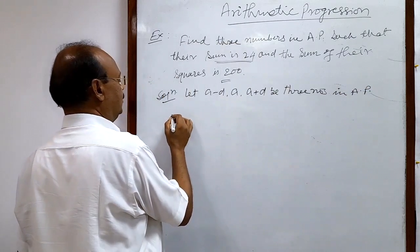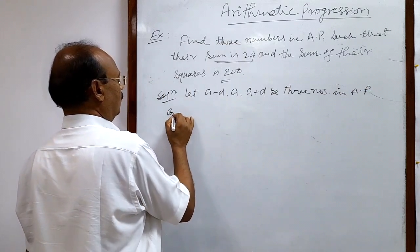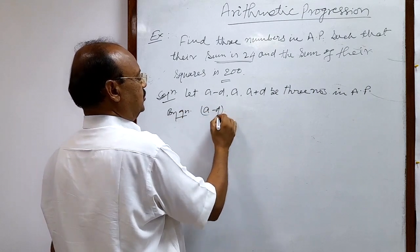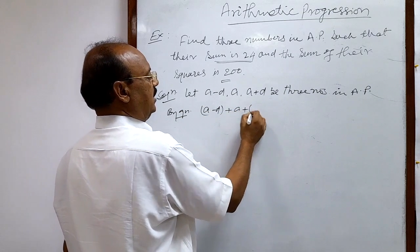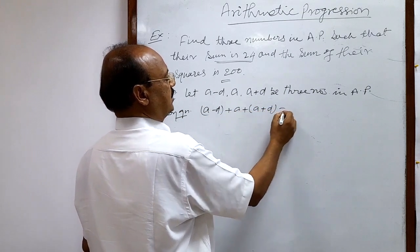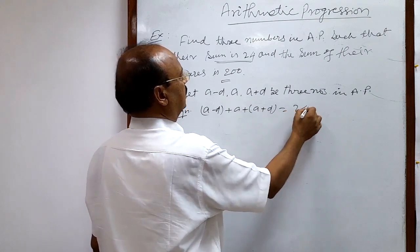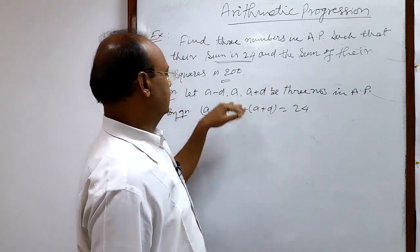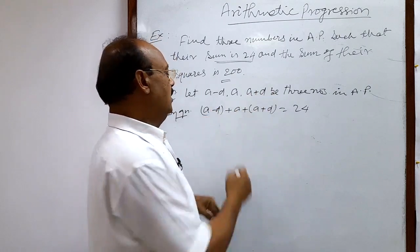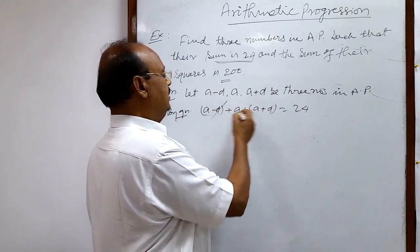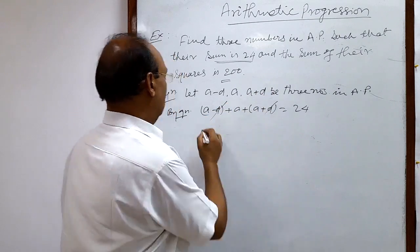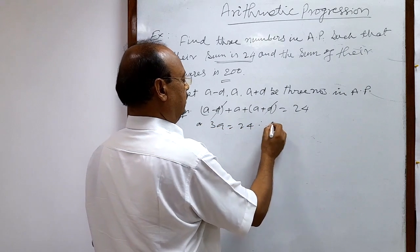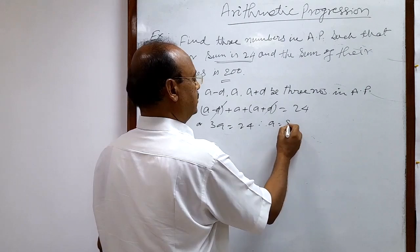According to the question, the sum of these 3 numbers is given. So, a minus d plus a plus a plus d is equal to 24. The benefit of taking this form is that minus d and plus d cancel out, giving us 3a equals 24, and therefore a equals 8.